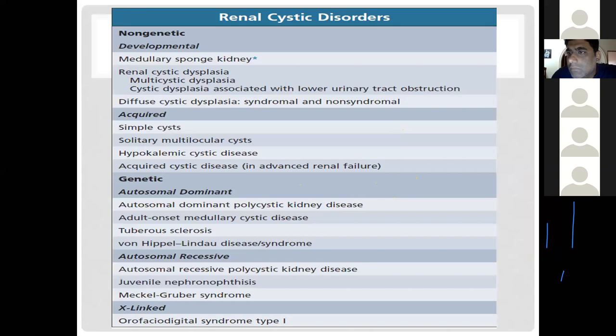Cystic disorders are divided into non-genetic and genetic categories. In the non-genetic group, there are developmental disorders acquired during the prenatal period due to environmental factors — chemical or biological — but not genetic. In acquired disorders, there are also conditions involving cystic transformation of the kidneys.